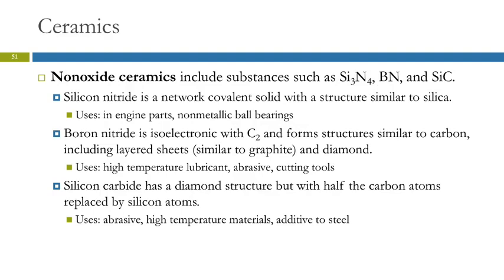Because of this, boron nitride forms structures similar to those that carbon forms, including layered sheets like graphite and diamond structures. It's used in high-temperature lubricants, abrasives, and cutting tools.